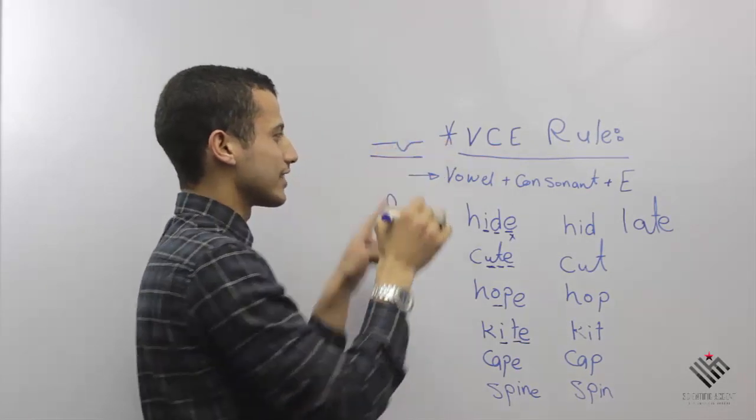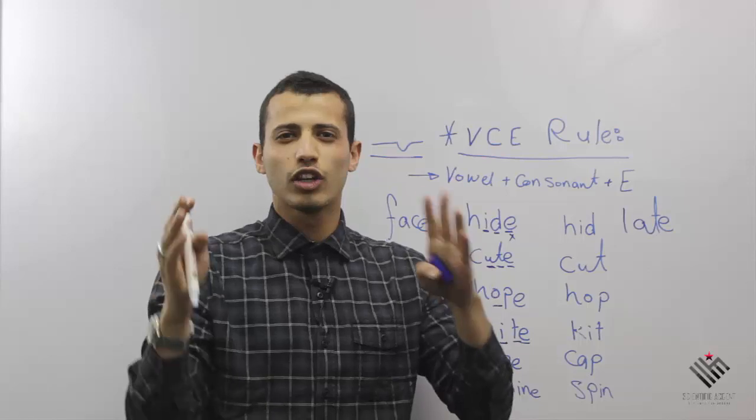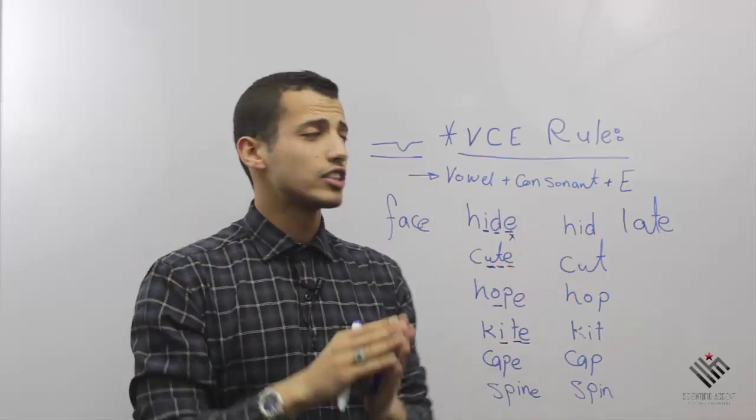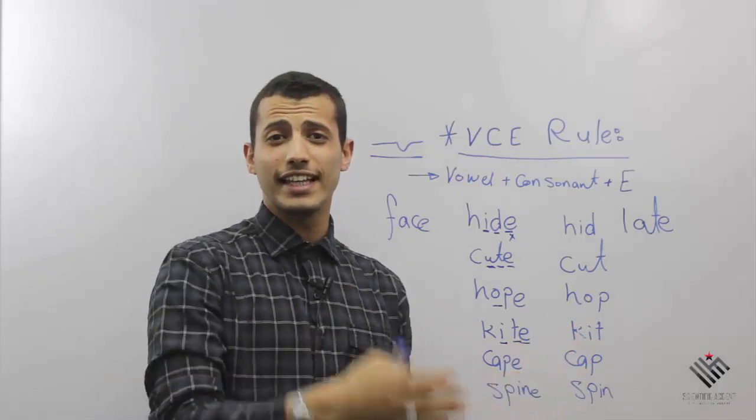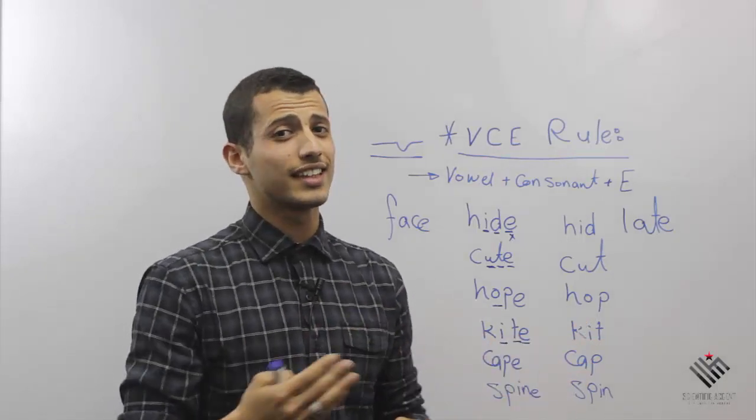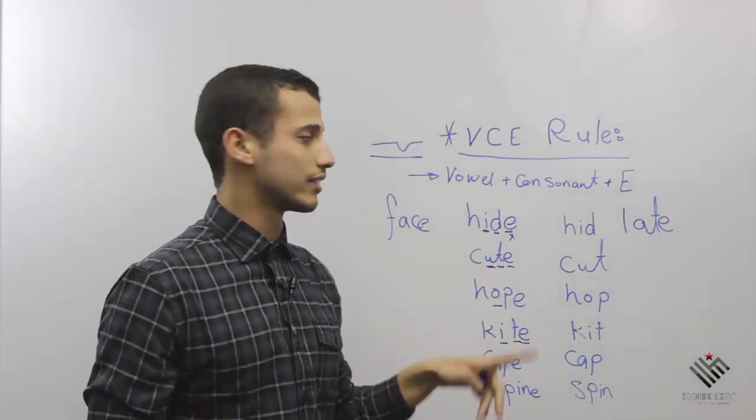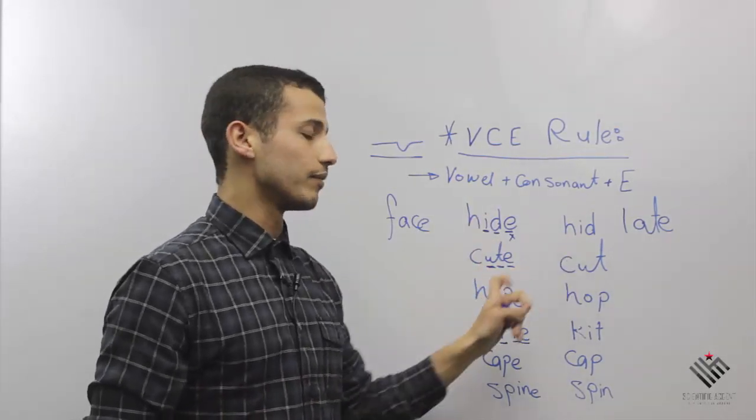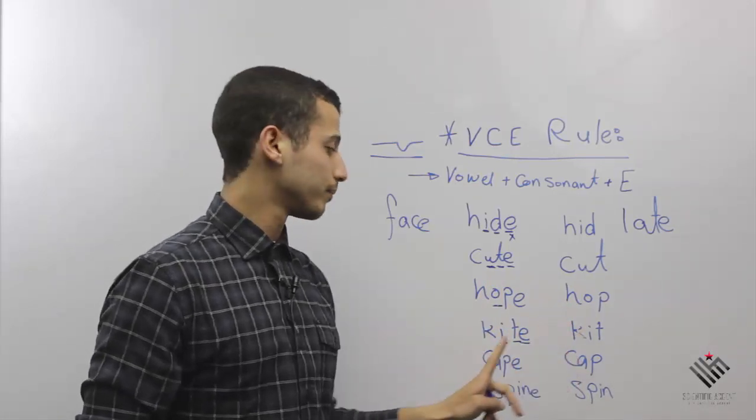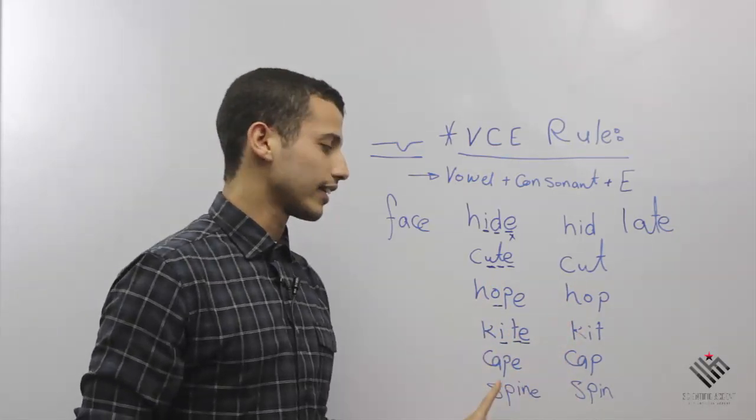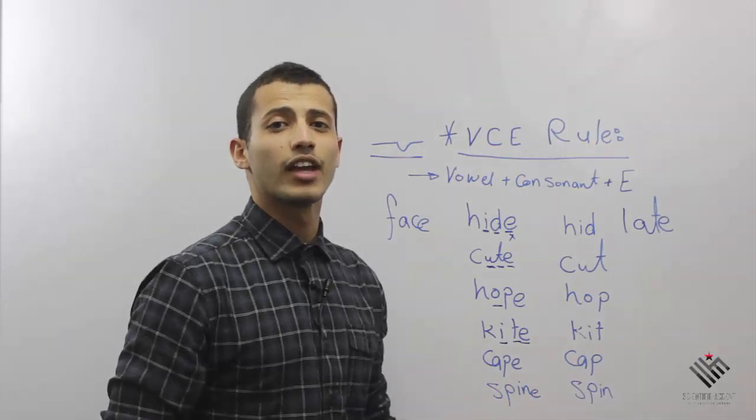So again, let's recap quickly. The VCE rule: whenever you see a word that ends with vowel, then consonant, then E, you're going to pronounce the vowel as a letter in the alphabet. Hide, hid. Cute, cut. Hope, hop. Kite, kit. Cape, cap. Spine, spin.